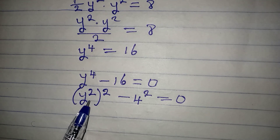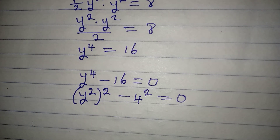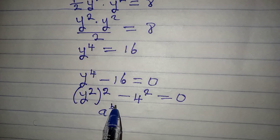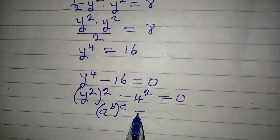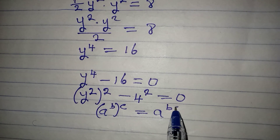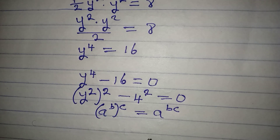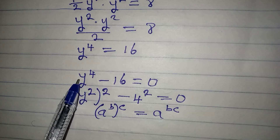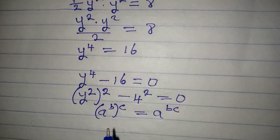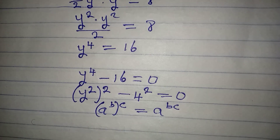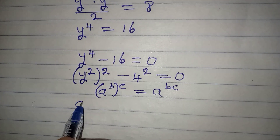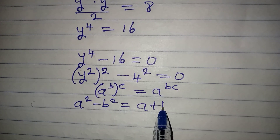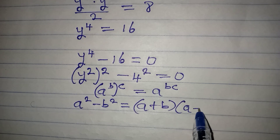As it is now, we are having a difference of two squares. Because if you have a to the power of b to the power of c, and you open the bracket, then you have a to the power of bc, meaning you multiply the powers. Then applying our difference of two squares: if you have a squared minus b squared, this will be the same thing as a plus b into a minus b.